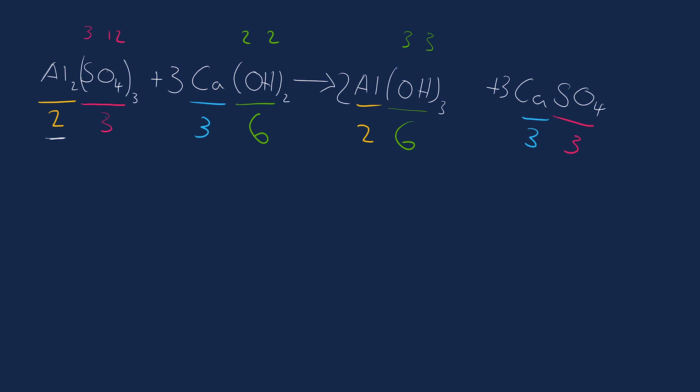So is that balanced out? Let's see. Aluminum, one, two. Aluminum, one, two. Sulfate groups, three of those. Sulfate groups, three of those. Calcium, three of those. Calcium, three of those. OH, six of those, six of those. So this is now balanced. And this is the way to go about doing it.